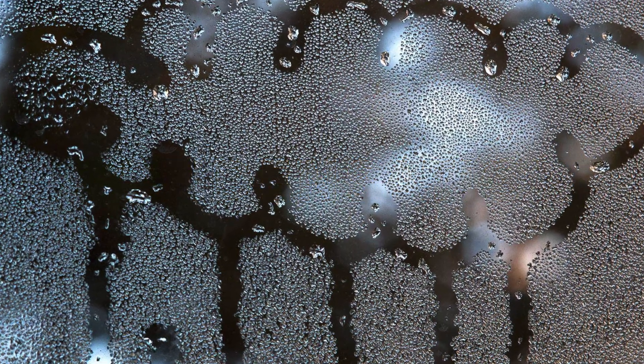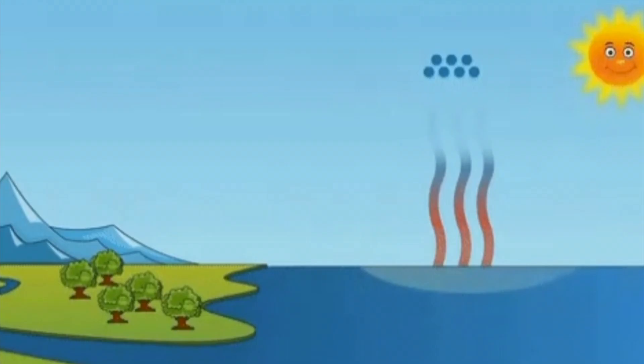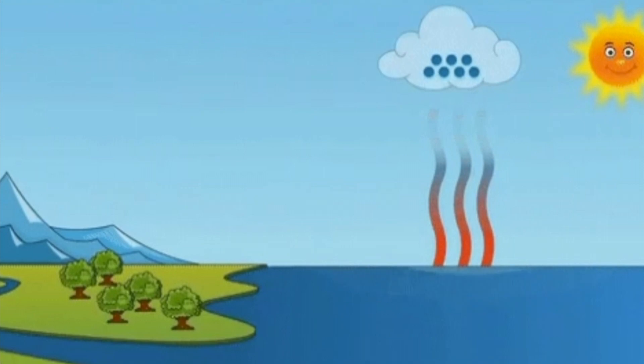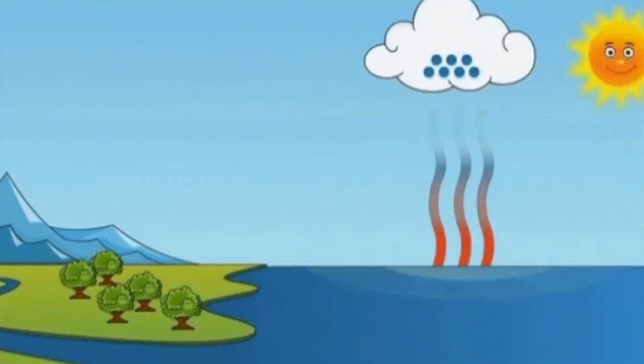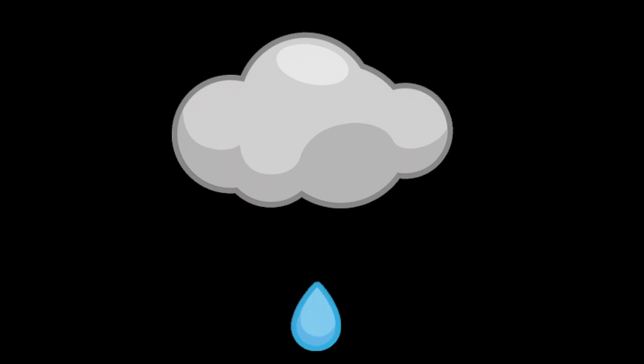So water vapor similarly goes up in the sky and cools down to form clouds. When the clouds become heavy with these drops of water, they fall down as rain.